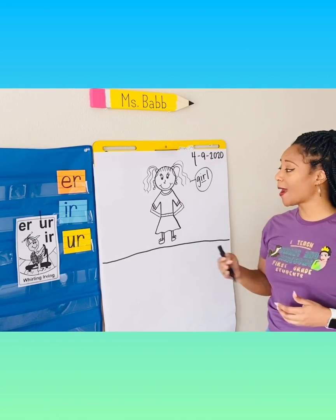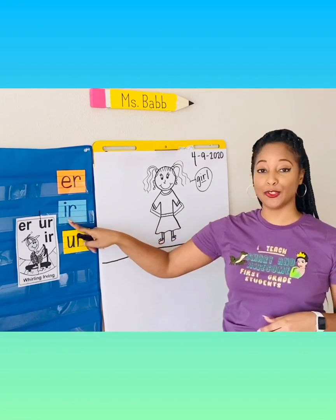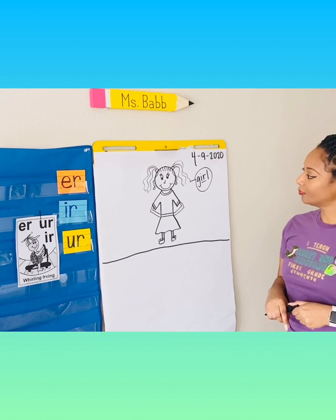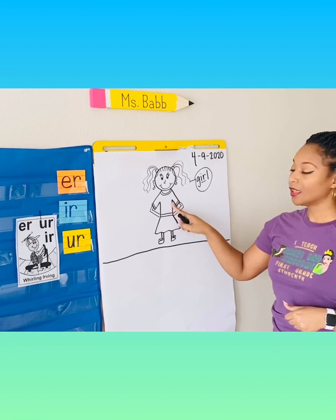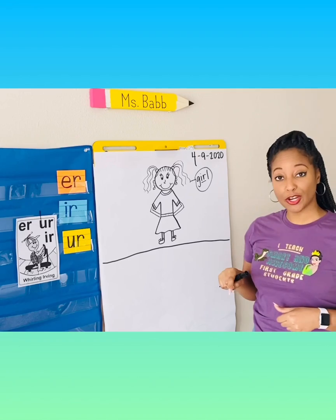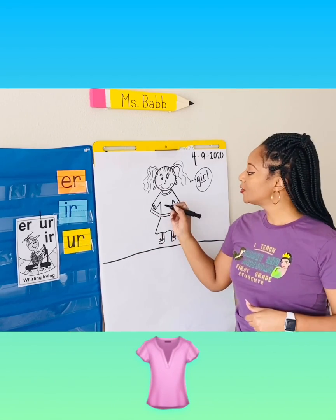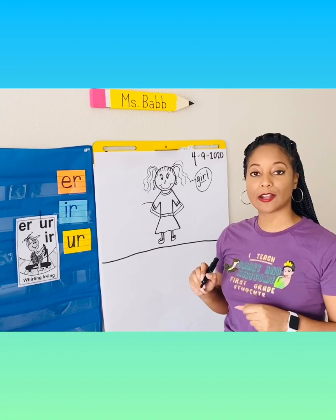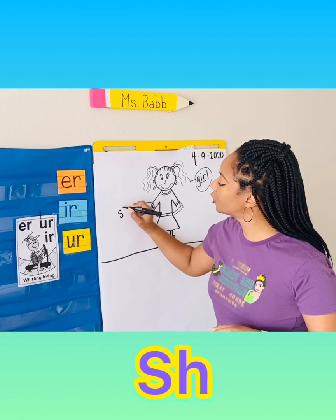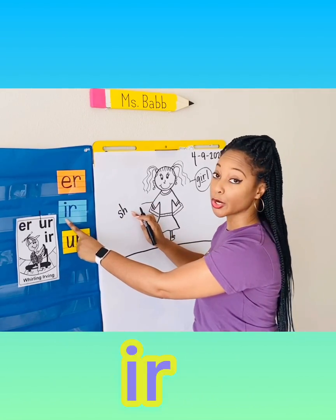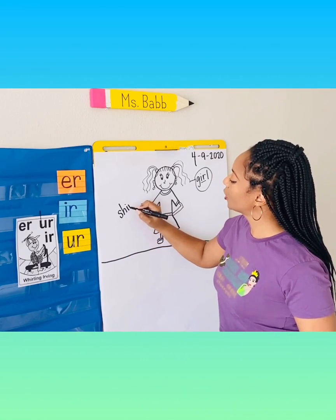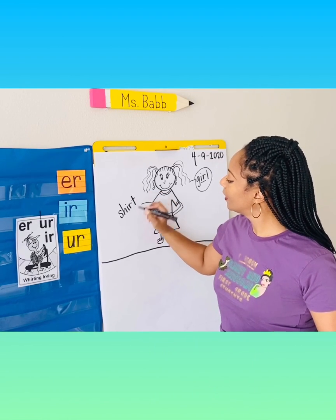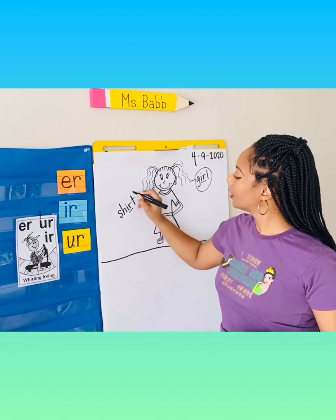Did you know that there are other objects in this picture that make the UR sound using IR? Can you figure it out? What is she wearing right here? That's a shirt. Shirt has the IR sound in it. So let's label that. SH is the first sound — S-H. Then UR — I-R. SH-UR-T, T. And circle it.